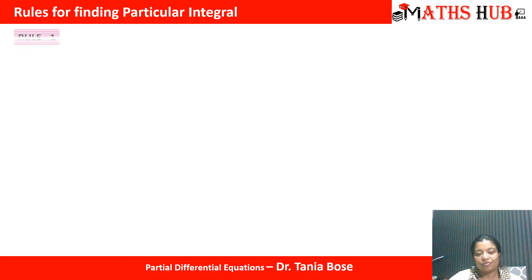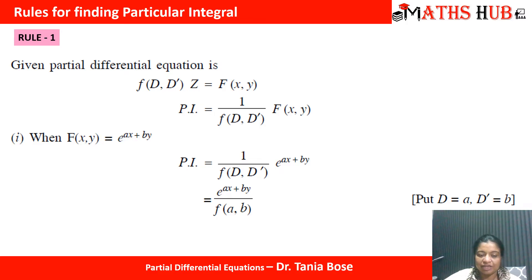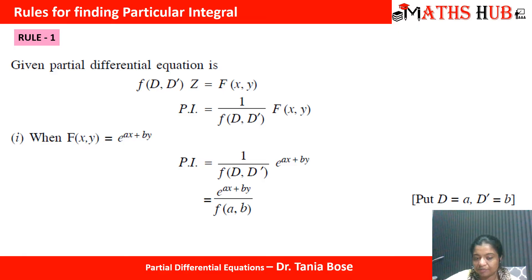What is the first rule for calculating the particular solution? The particular integral or the particular solution mainly depends upon the right-hand side function. We assume the right-hand side function to be e to the power ax plus by. If the function is e^(ax+by), you simply replace D by a and D' by b. When you replace D by a and D' by b, we will get e^(ax+by), and in the denominator D gets replaced with a and D' gets replaced by b.